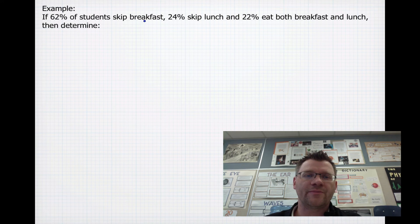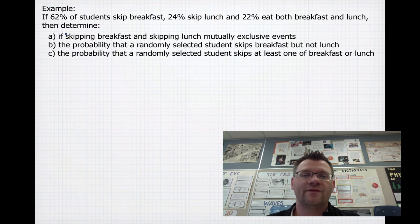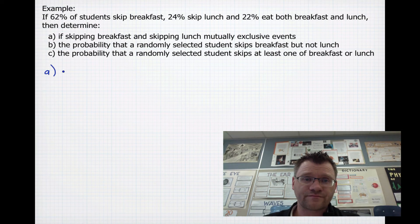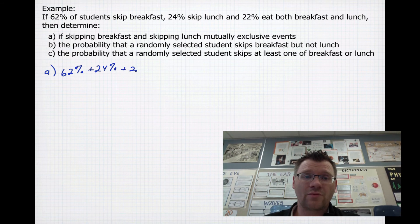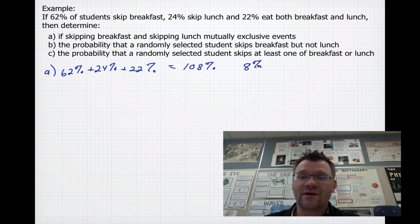If 62% of students skip breakfast and 24% skip lunch, and 22% eat both breakfast and lunch, we determine the following three things. Part A asks if skipping breakfast and skipping lunch are mutually exclusive events. Well, if they're mutually exclusive, then all the probabilities should add up to 100%. But when we add them together, we get 108%, which tells us they're not mutually exclusive because 8% have been counted twice.